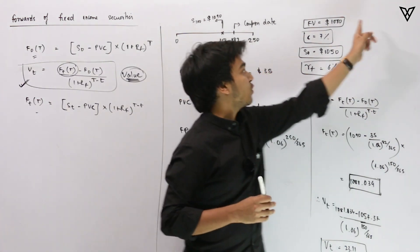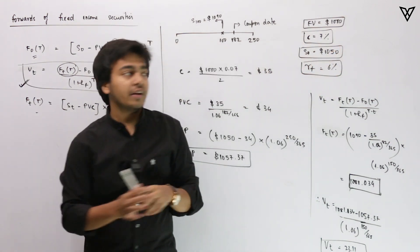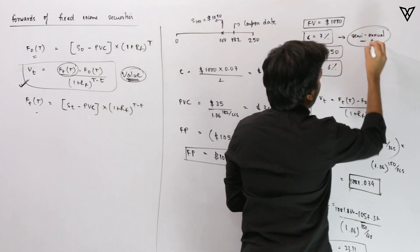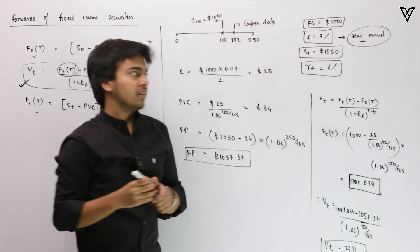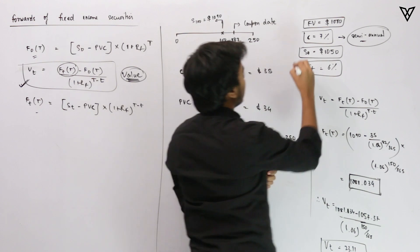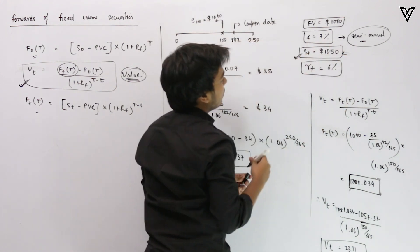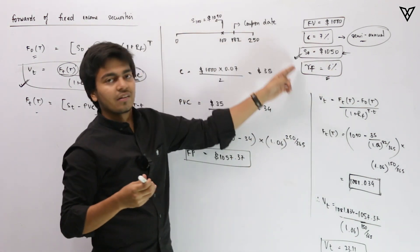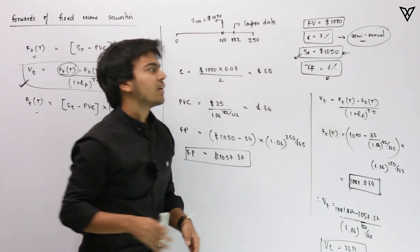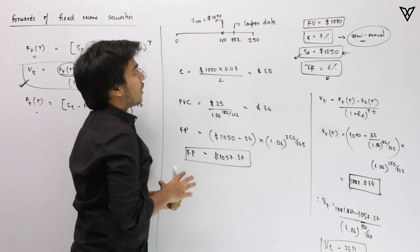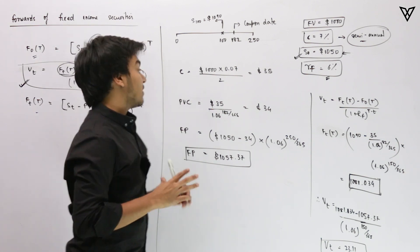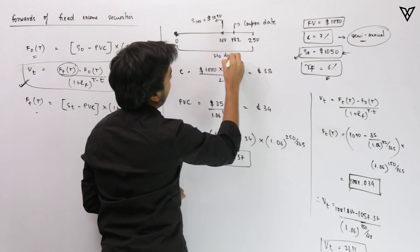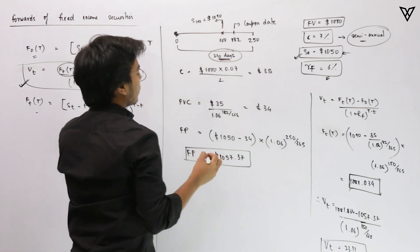We have a bond with a face value of $1,000. The coupon rate is 7%, with semi-annual payments, so you get $35 at the end of the first half-year and another $35 at the end of the year. The spot price today is $1,050 — it is trading at a premium. The risk-free rate is 6%. Since the coupon rate exceeds the YTM (the risk-free rate), it trades at a premium. We are standing today and looking at a forward contract that is 250 days long, and we need to calculate the forward price F₀(T).